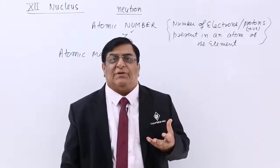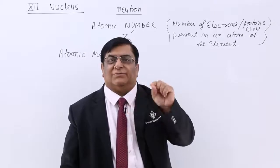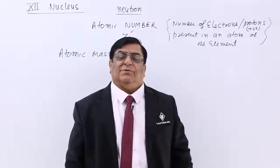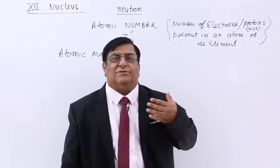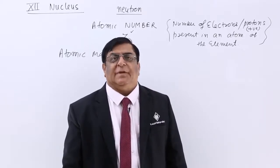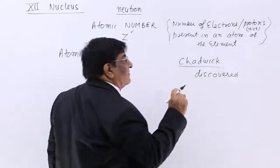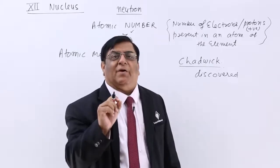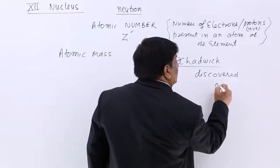In hydrogen also, we have seen there is one hydrogen which has got 1 proton and mass is 1. There is another hydrogen which has 1 proton but mass is 2. There was no explanation earlier, so there was a lot of confusion. Finally, a scientist named Chadwick discovered a new particle — a member of the nucleon — and that new particle he named the neutron.